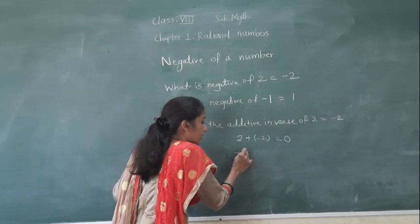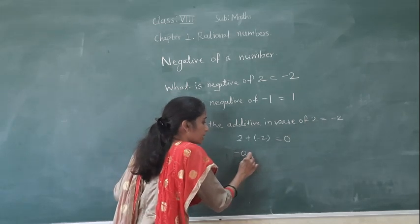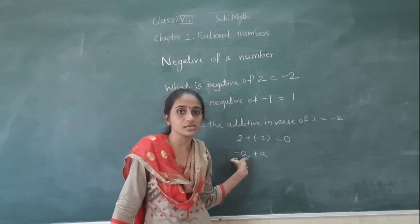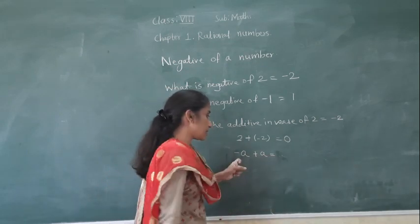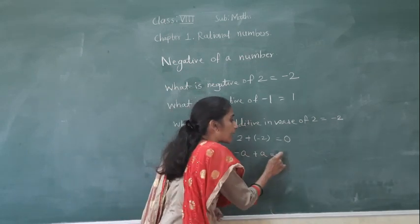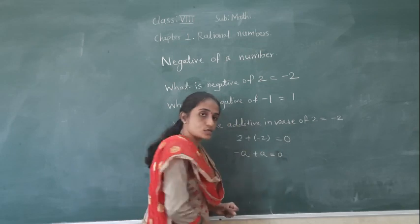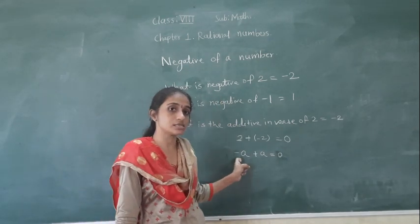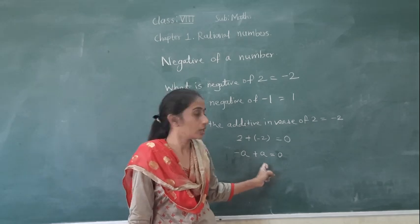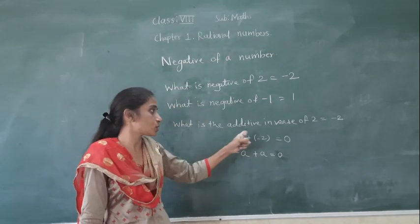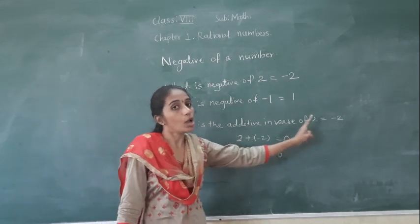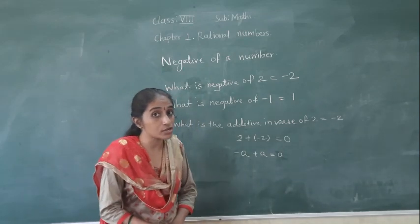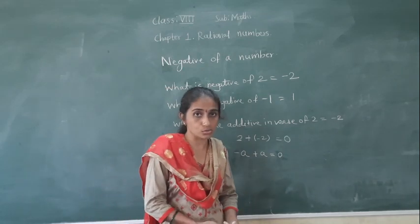What is the additive inverse of minus k? It is plus k. When minus k plus k, what we get is 0. So what is the additive inverse of 2? Minus 2. What is the additive inverse of minus 2? Plus 2.